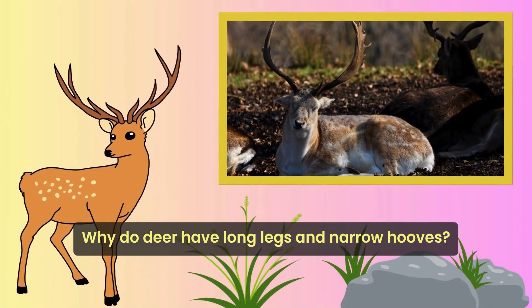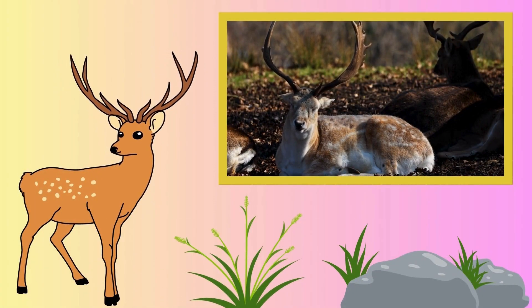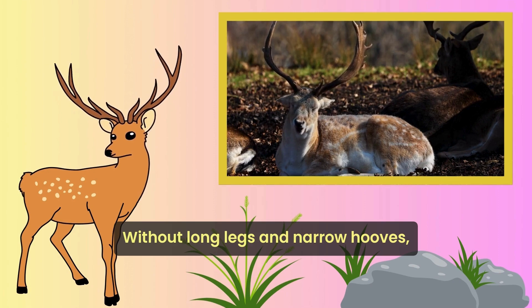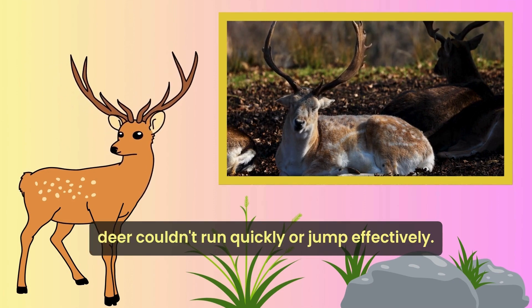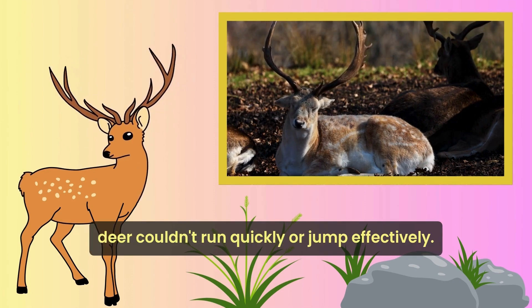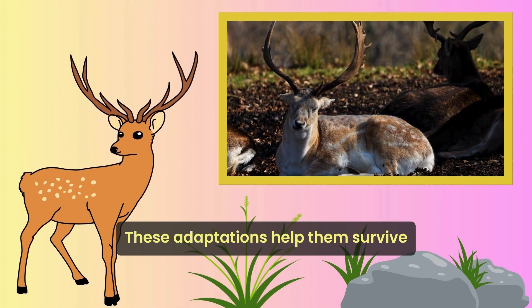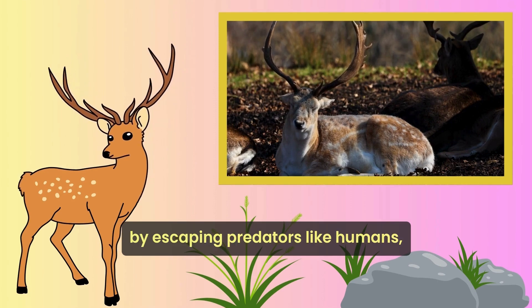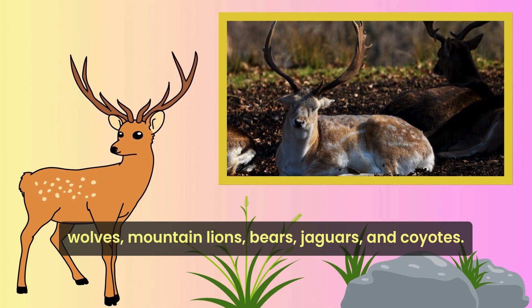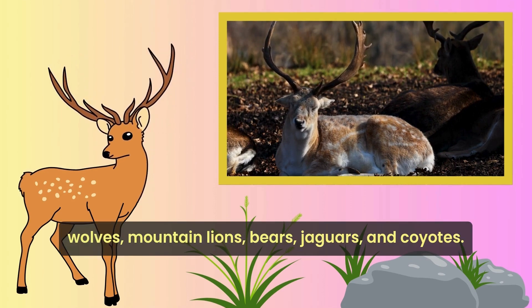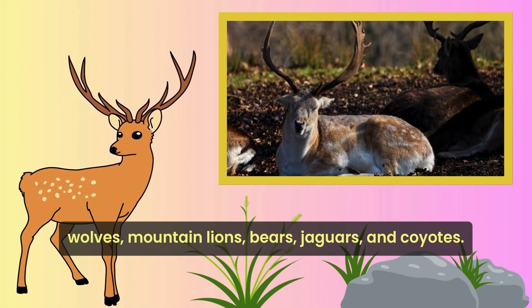Why do deer have long legs and narrow hooves? Without long legs and narrow hooves, deer couldn't run quickly or jump effectively. These adaptations help them survive by escaping predators like humans, wolves, mountain lions, bears, jaguars, and coyotes.